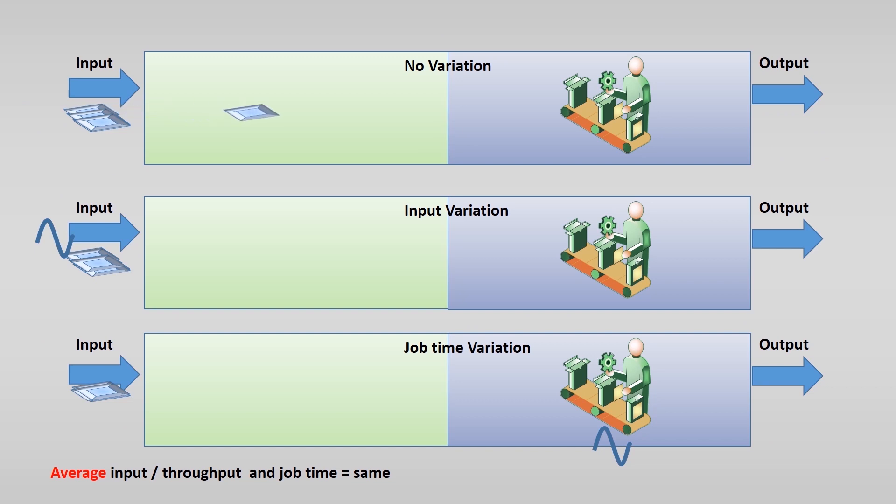Suppose you have no variation and the throughput matches the capacity of the job. We have almost 100% utilization. You see, the flow of the orders is without any delays.